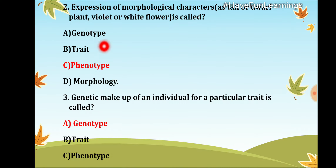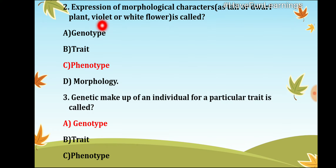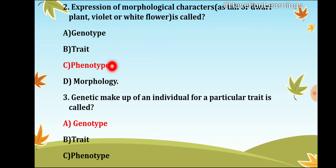The next question is about the expression of morphological characters — such as tall or dwarf plant, or flower color like violet or white. The expression of these morphological characters is called phenotype.